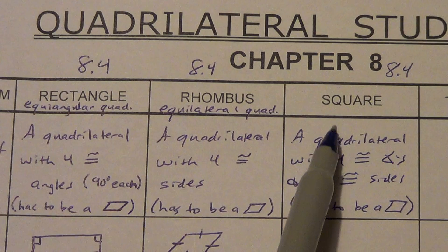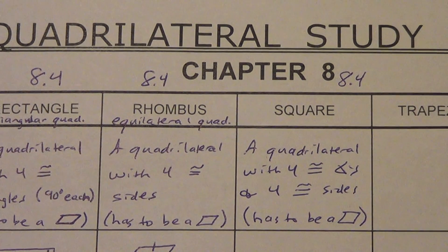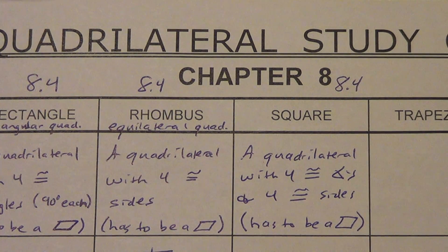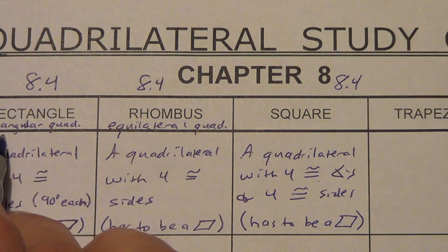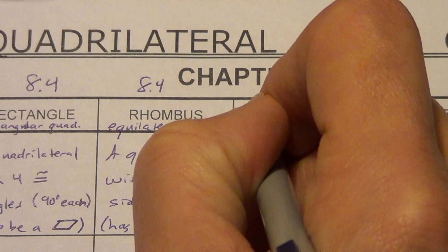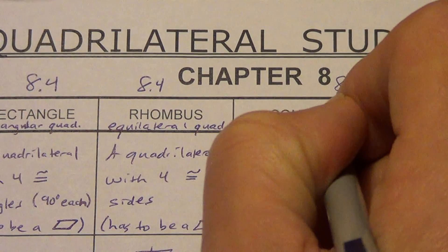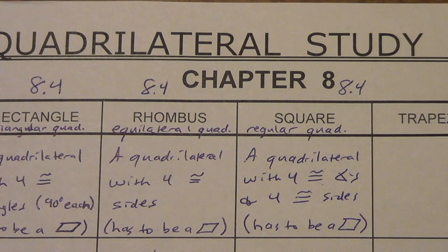This is one of those where we can come up with a two-word definition. Can anyone think of a two-word definition? Equiangular — all congruent angles. Equilateral — all congruent sides. What is that when we put it together? Regular. Regular quadrilateral. Keep in mind, the word 'regular' has a very special meaning in geometry: it means something is both equilateral and equiangular. It does not mean typical or normal.